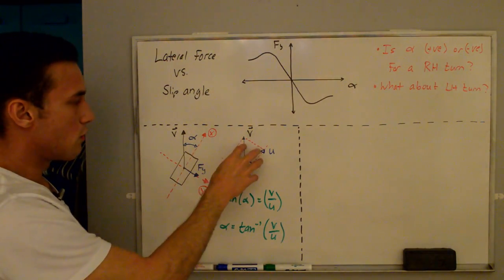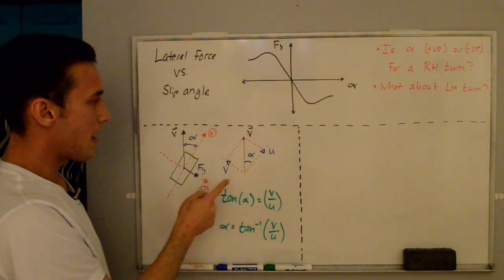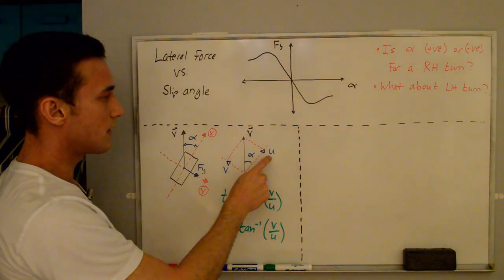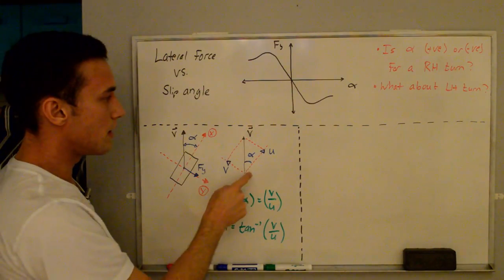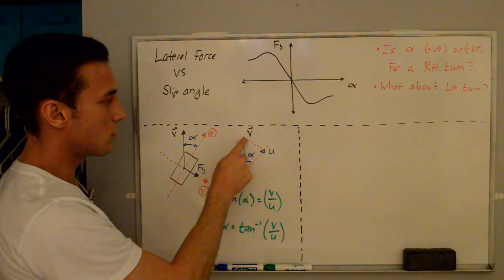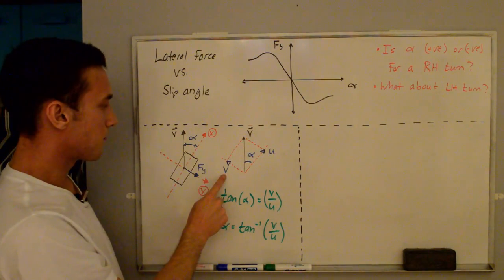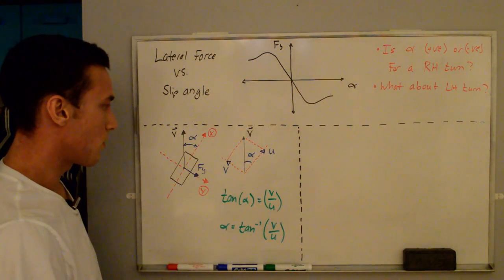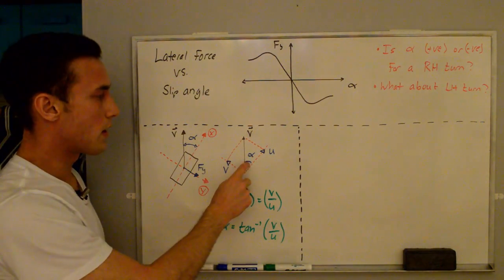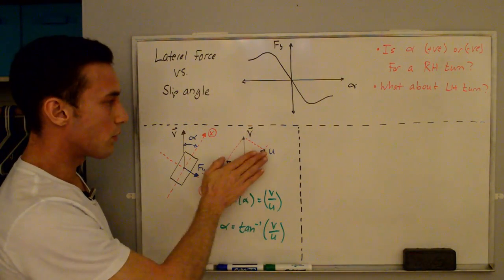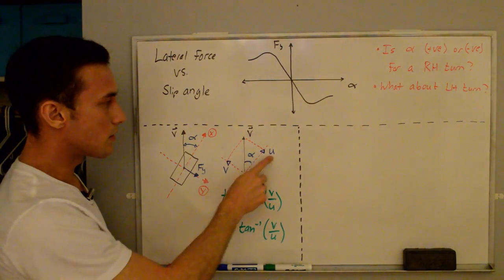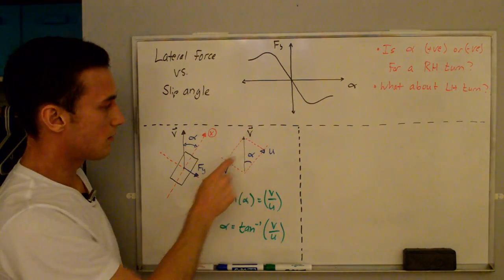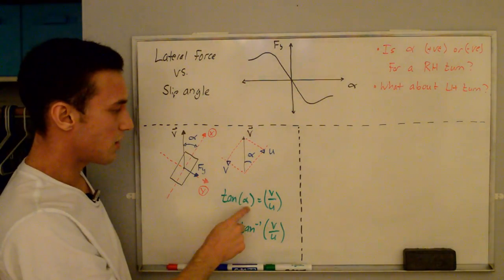We can move this figure over to the plot. We're always assuming forward motion, so u is always positive. We can break the velocity vector V into components: the u-direction (x-direction) velocity and the v-direction (y-direction) velocity. Looking at the triangle formed, the tangent of alpha equals v over u — the opposite over the adjacent. So alpha equals the inverse tangent of v over u.